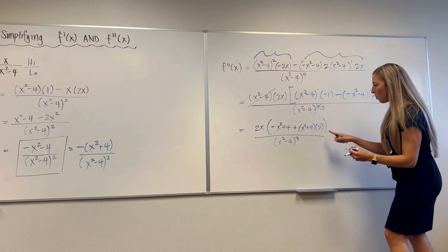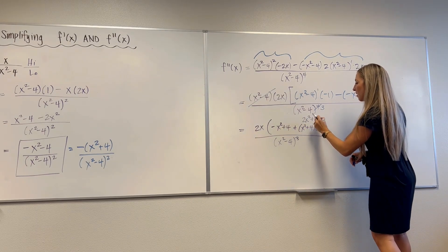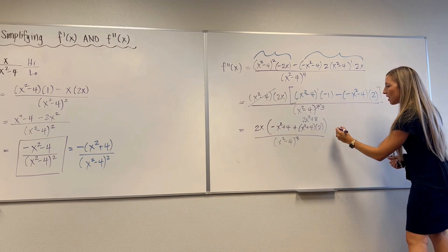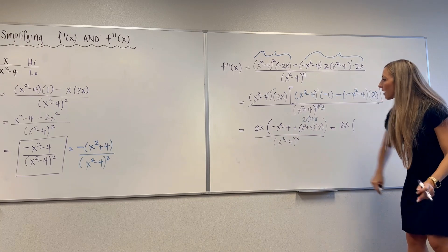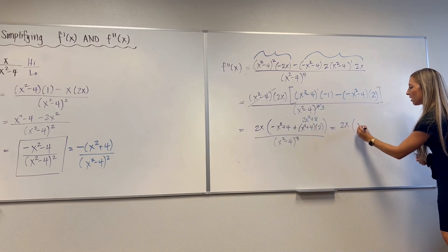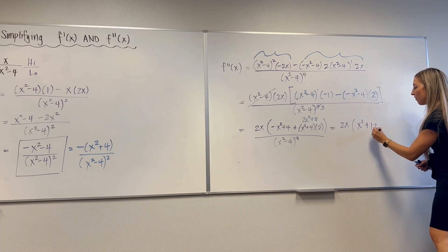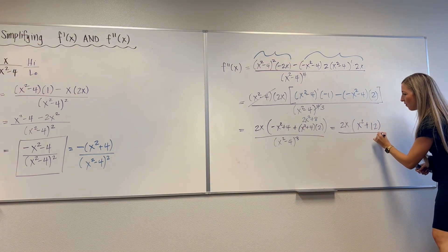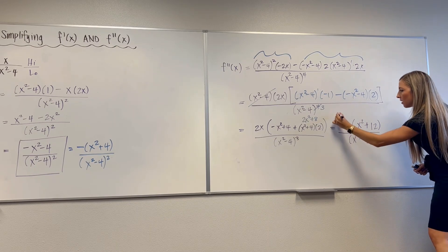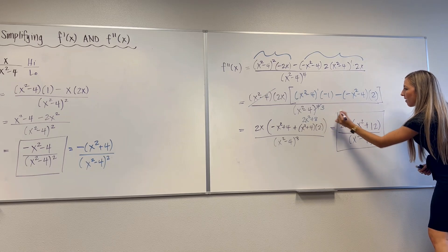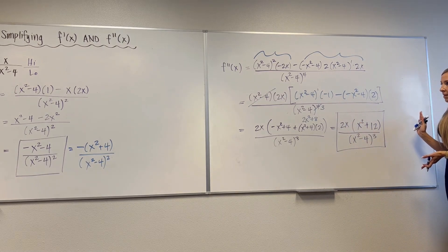So we've got 2x times, I'll change back to parentheses. This is going to be negative x squared plus 4. This is going to be plus x squared plus 4 times 2. So we're going to be negative x squared over x squared minus 4 cubed. Just so I don't rewrite the whole thing out. This is 2x squared plus 8. So then now we've got 2x, 2x squared minus x squared, that's 1x squared. And then we have 8 plus 4, that's 12, over x squared minus 4 cubed. Box it. Love it.